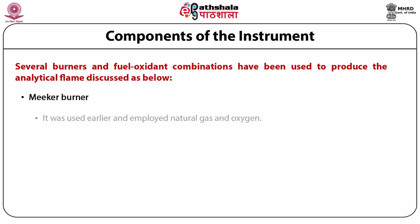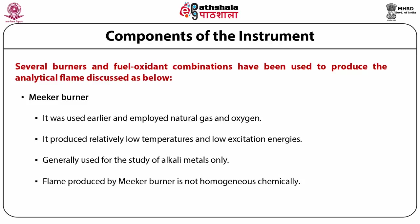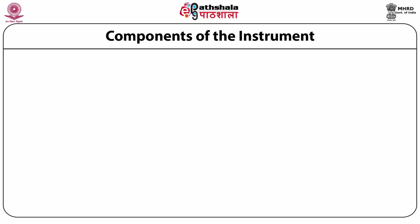The Meeker Burner was used earlier and employed natural gas and oxygen. As this burner produced relatively low temperatures and low excitation energies, it was generally used for the study of alkali metals only. The flame produced by the Meeker Burner is not homogeneous chemically — there are different oxidizing and reducing regions in the flame, resulting in different concentrations of excited atoms in these regions.